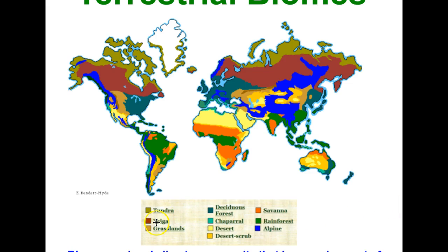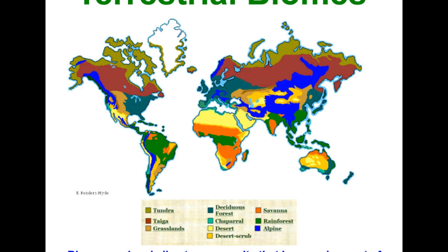For example, taiga has another name — deciduous forest. Chaparral is another example where biomes are the same thing but just called differently. We're going to use the ten names that are used in your book. To get that started, let's take a look at the tropical rainforest.